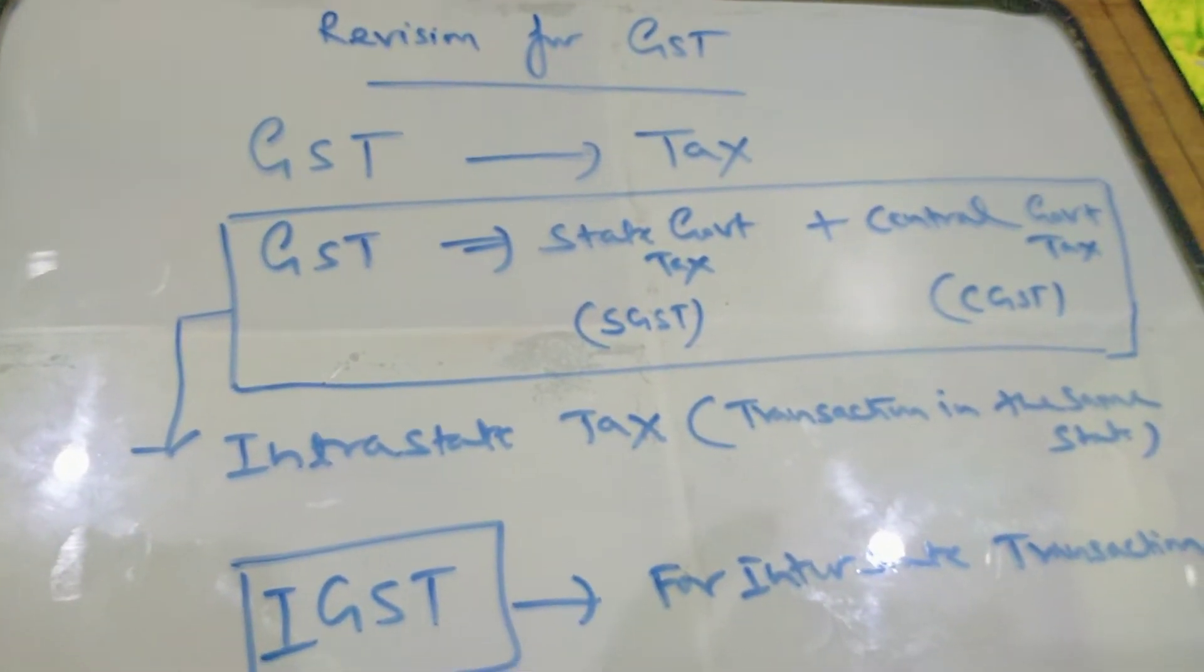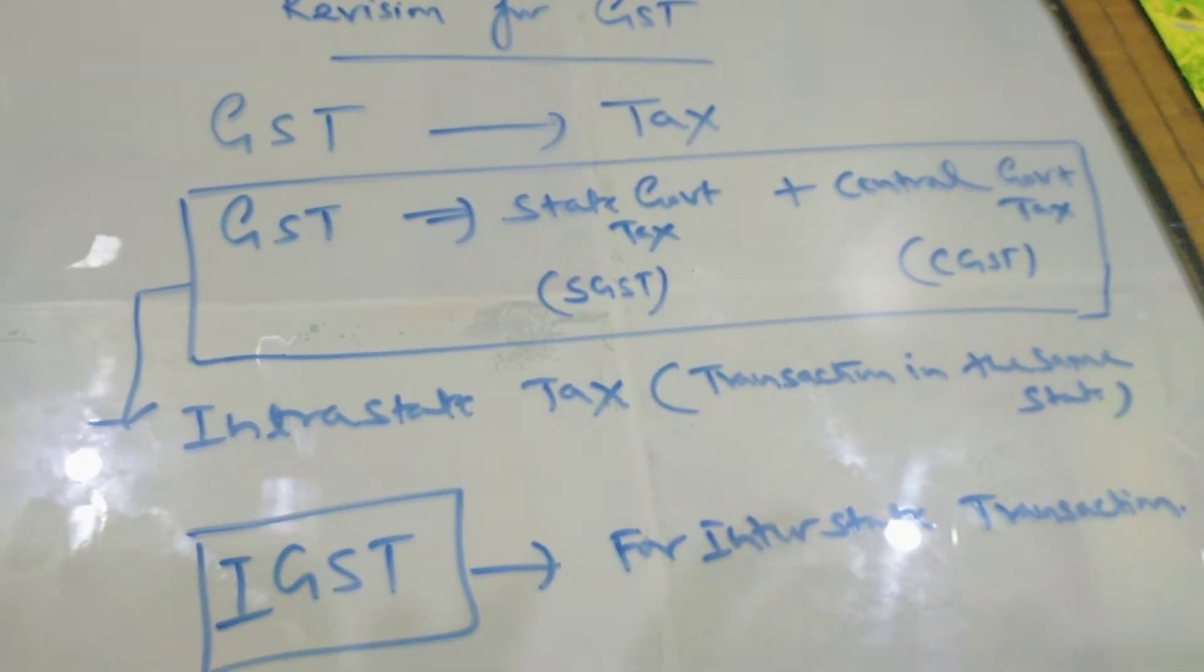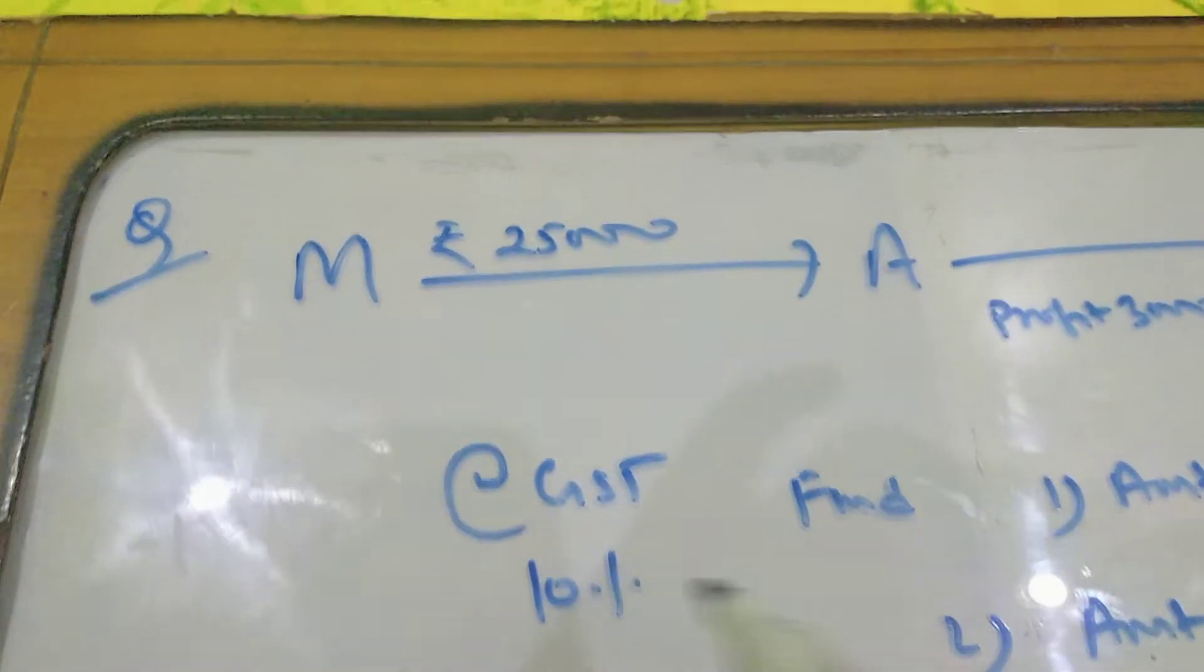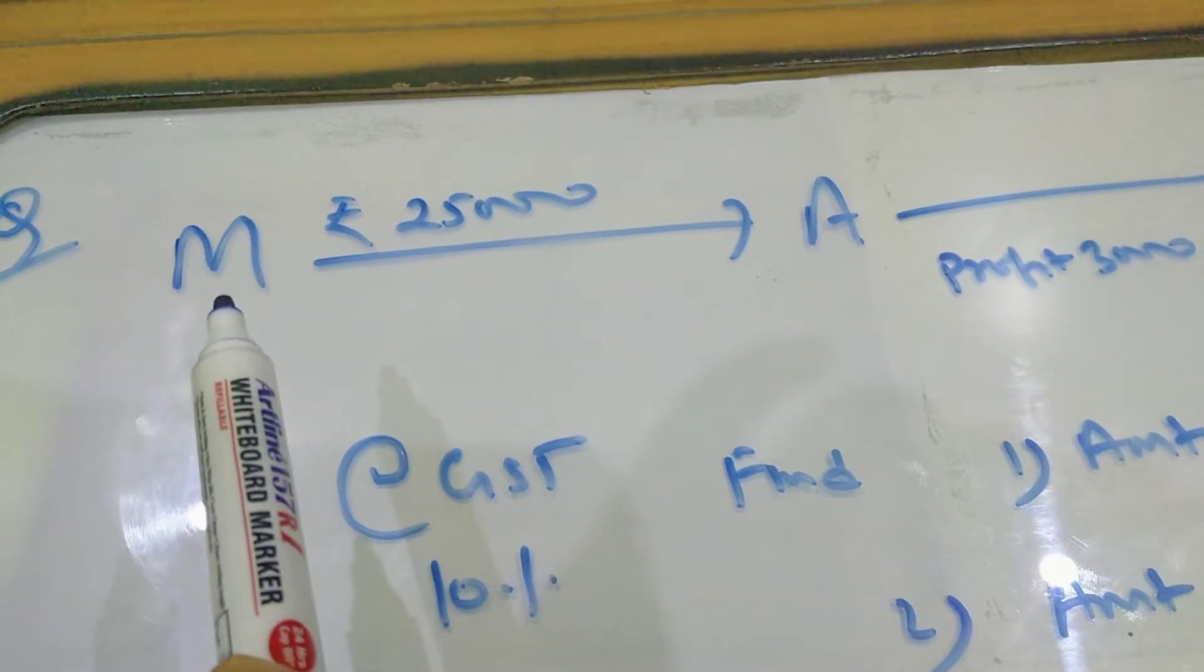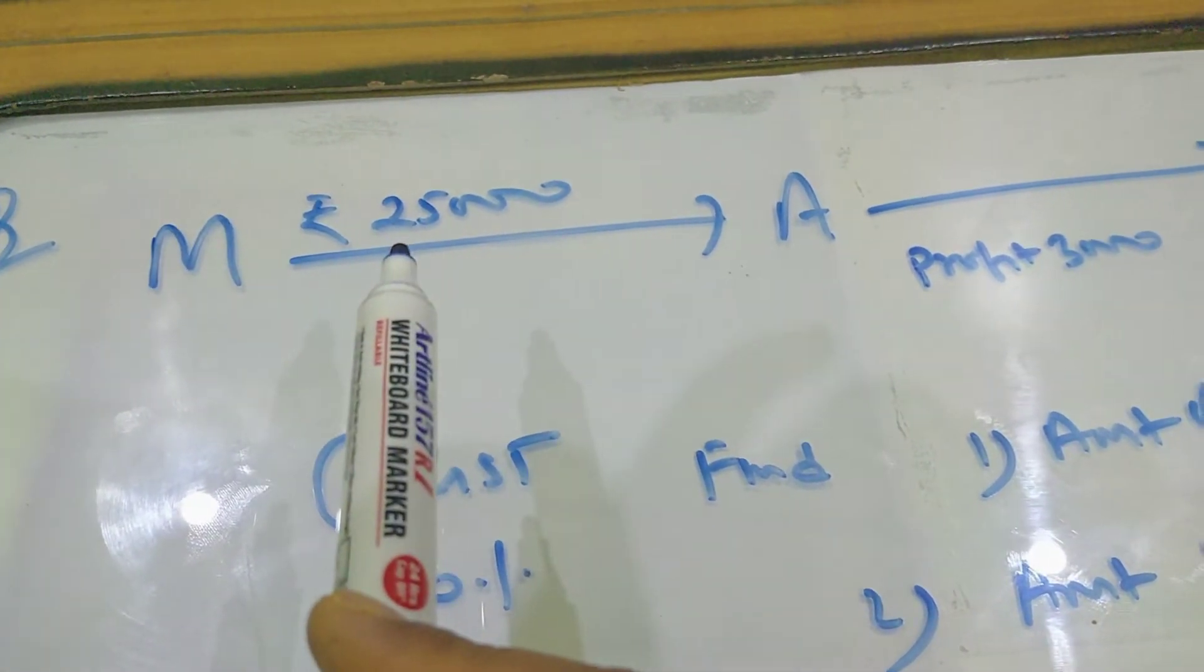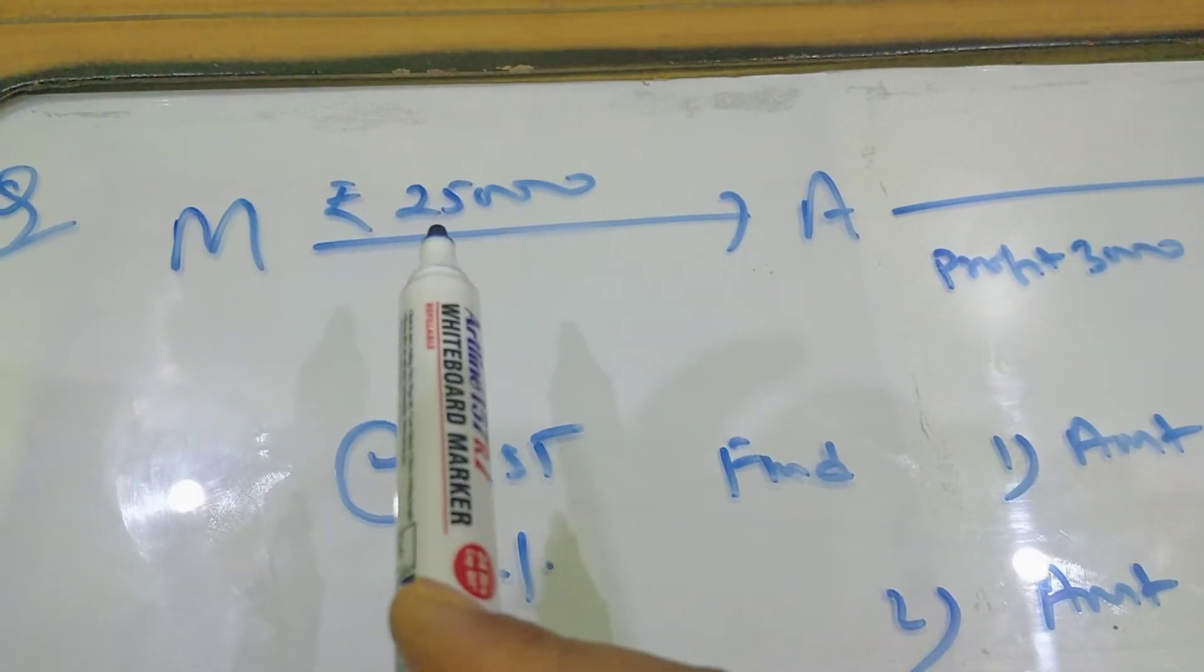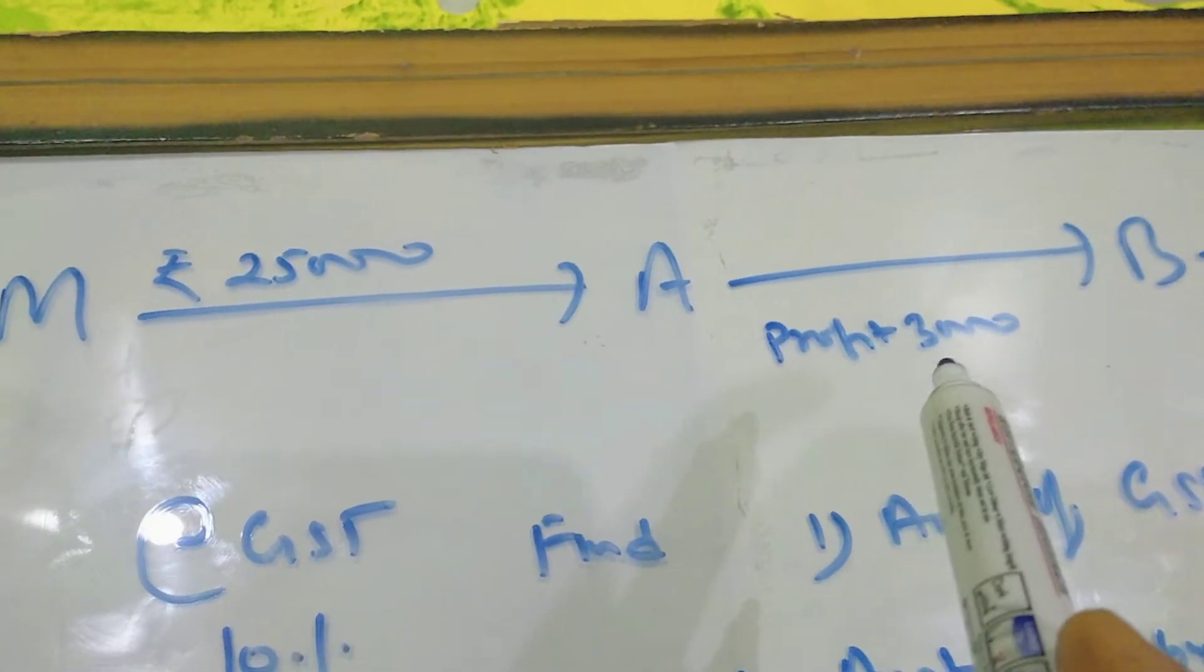So you should note down this part. I will give an example through which I'm trying my best to make you understand how to calculate GST. Look at this question. In this question, we have a manufacturer selling an article to dealer A for 25,000 rupees, means cost price for this person is 25,000.